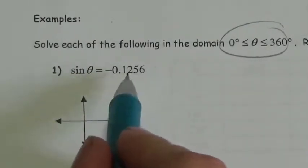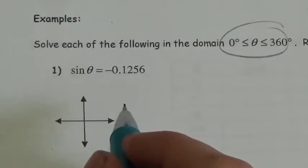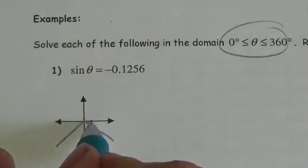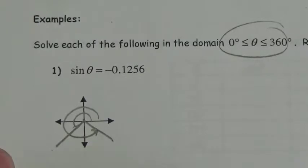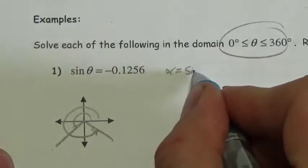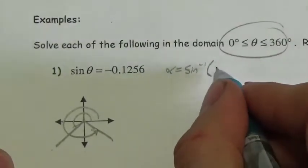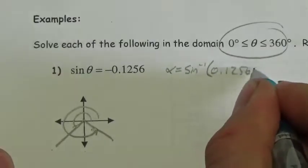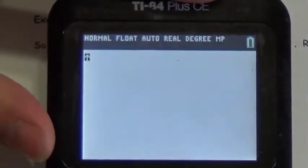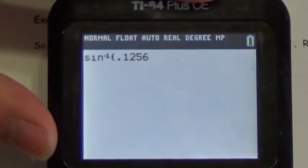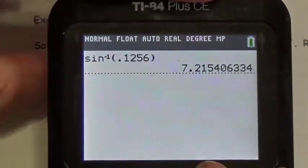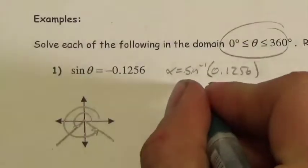Sine is a negative ratio here. The negative tells us that sine is related to the y-coordinate, and y is negative in quadrants 3 and 4. So the very first thing I'm going to do is find the angle inside the triangle by performing the inverse sine of the positive 0.1256. So: second sine, inverse sine of 0.1256. Make sure I'm in degree mode. And I get just this itty-bitty little 7 degrees. So my reference angle is 7 degrees.